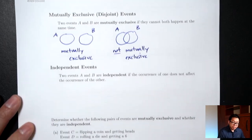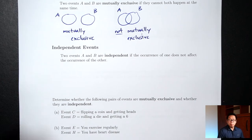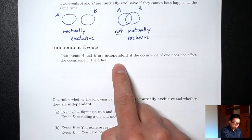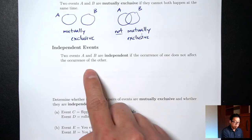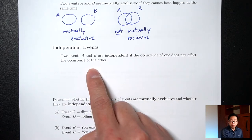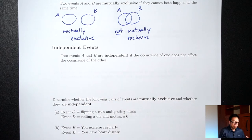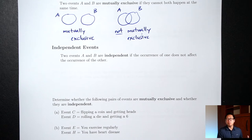The next idea is independence. Two events are independent if the occurrence of one does not affect the occurrence of the other. In other words, the two events don't have anything to do with each other at all — they don't affect each other at all.